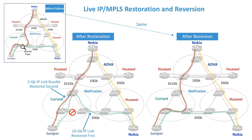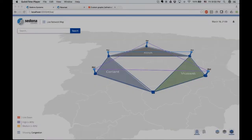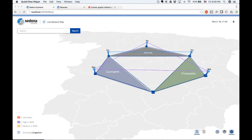Now let's see the restoration plan put into action in a live way. As a reminder, this upper left block represents the Telefonica lab prior to a failure. Notice that two IP links traversing the Coriant domain share an optical link. This is the optical link that we will fail in order to demonstrate the NetFusion restoration app restoring the network according to the plan we just reviewed. Once the failure is resolved, we will demonstrate the network being reverted to the same state it was prior to the failure. To induce a fiber cut, we perform a cold start on the Coriant line card using a Coriant EMS.